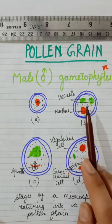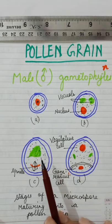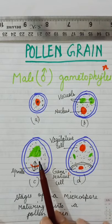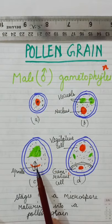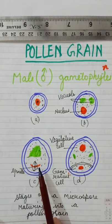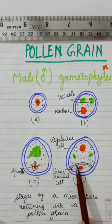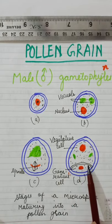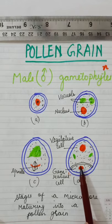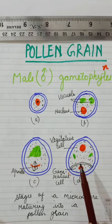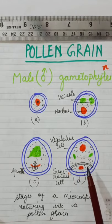Microspore nucleus then divides mitotically. Division of nucleus starts taking place - mitotic division - and it divides into two daughter nuclei. An oblique wall is laid down between these two nuclei and two different cells are produced. Two unequal cells are there.